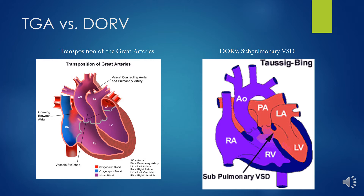In the subpulmonary Taussig-Bing anomaly, the VSD is positioned below the pulmonary valve. Oxygenated LV blood streams across the VSD into the pulmonary artery, causing pulmonary over-circulation and heart failure, while deoxygenated RV blood flows to the aorta, causing cyanosis similar to transposition of the great vessels. There is common association with coarctation of the aorta, aortic arch hypoplasia, and subaortic stenosis. The Taussig-Bing designation is applied for hearts with subaortic and subpulmonary coni, side-by-side great vessels, and subpulmonary VSD.